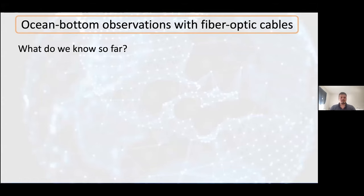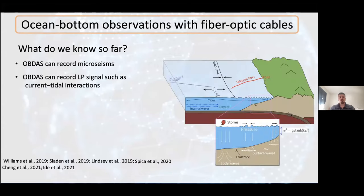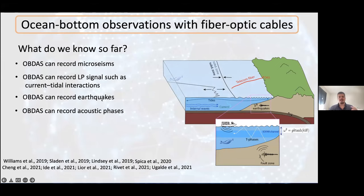From recent experiments we know that ocean bottom DAS can record microseisms — the interaction between ocean waves and the solid Earth — as well as what is going on inside the water column, such as currents or tidal interactions. We can also record earthquakes and acoustic phases such as T phases. A T phase is a wave generated by seismic waves converted into acoustic waves; if trapped in the SOFAR channel, they can travel thousands of kilometers. Yaolin Miao detected a T phase generated by a magnitude 4.8–5 earthquake in Chile recorded in Japan, about 12,000–13,000 kilometers away.